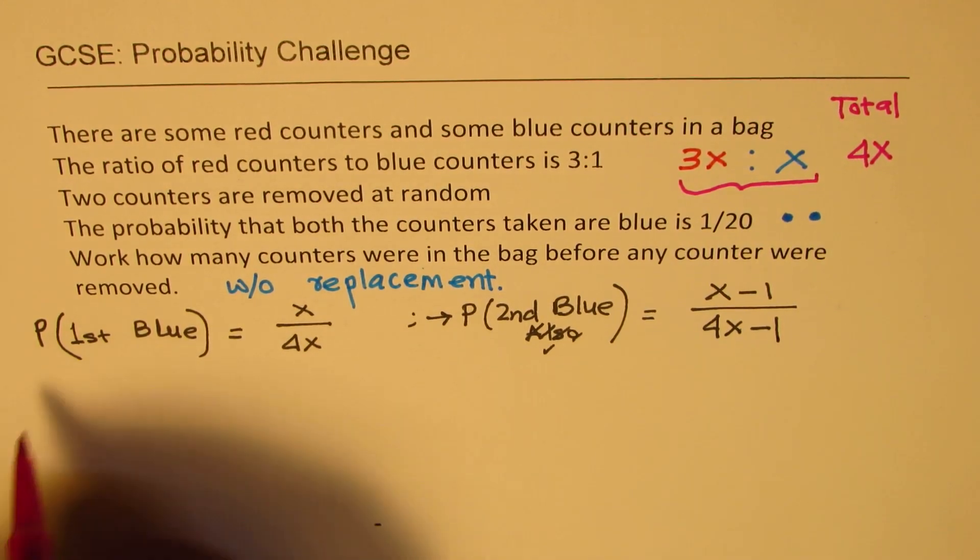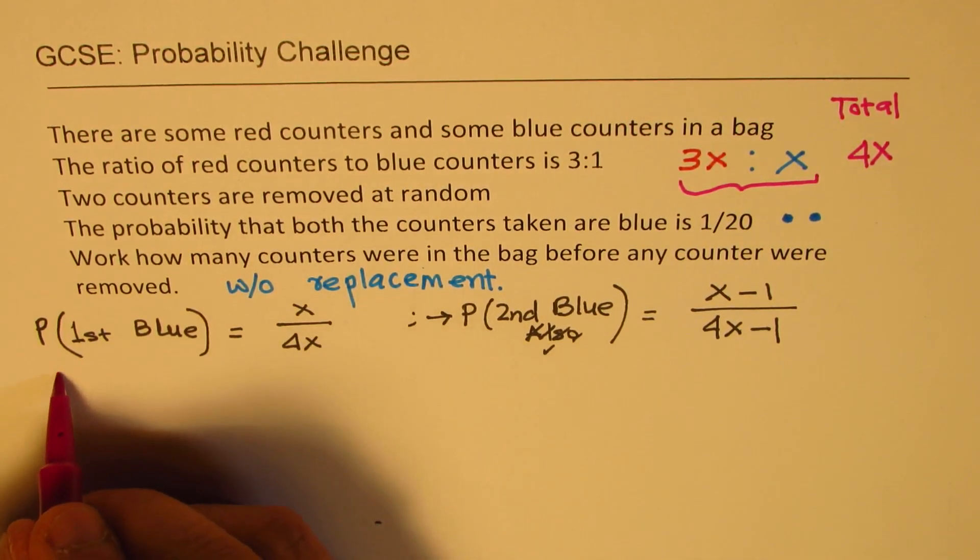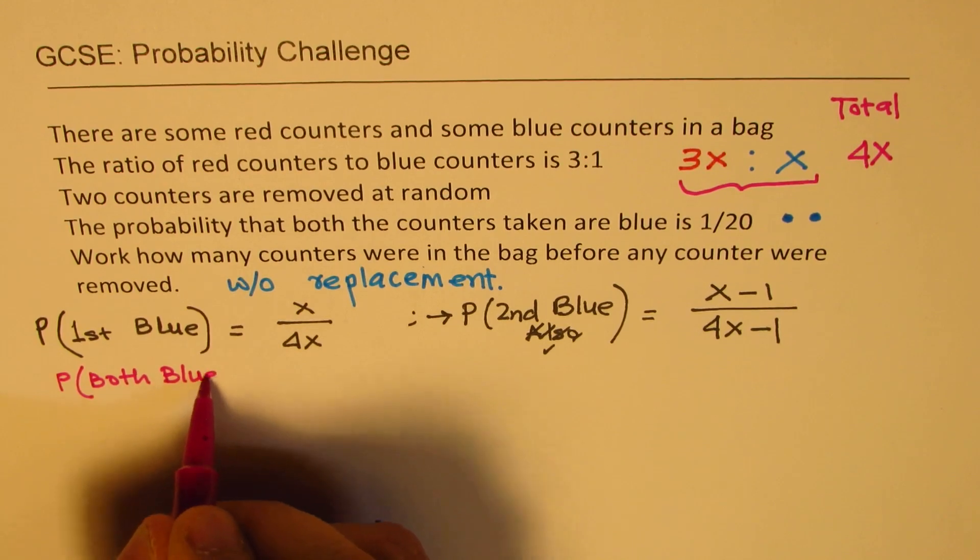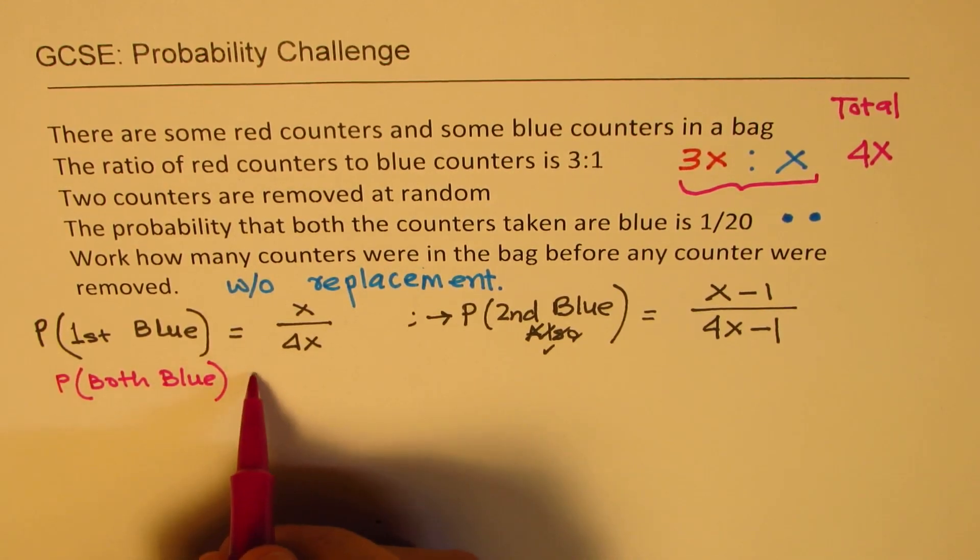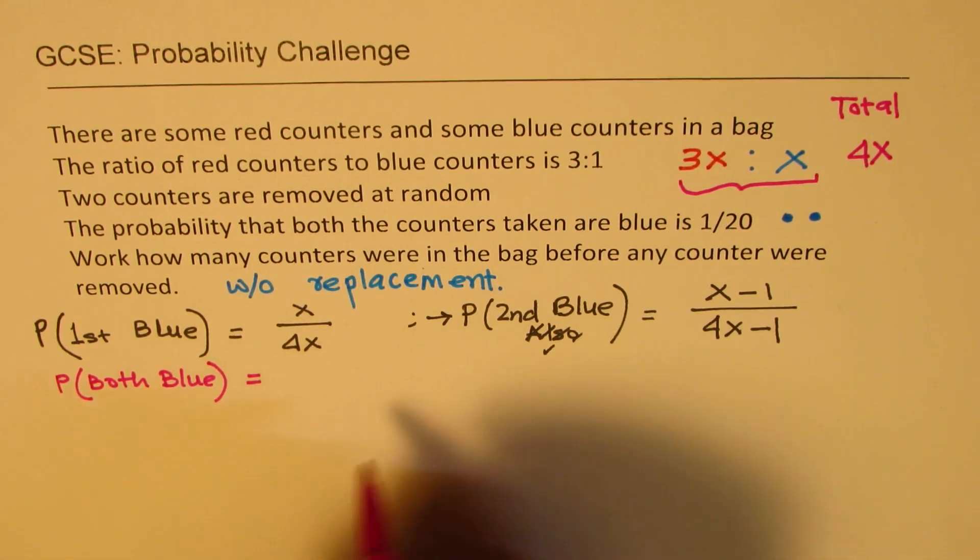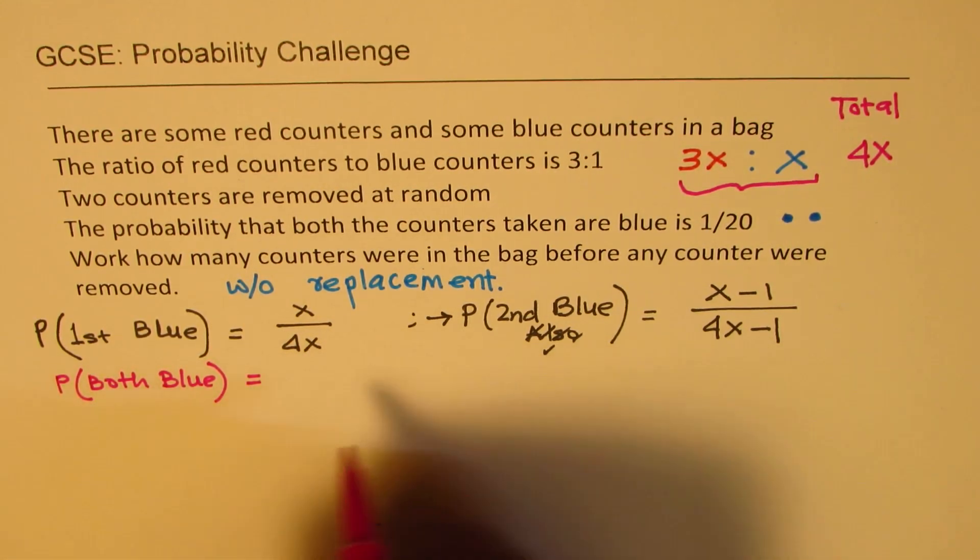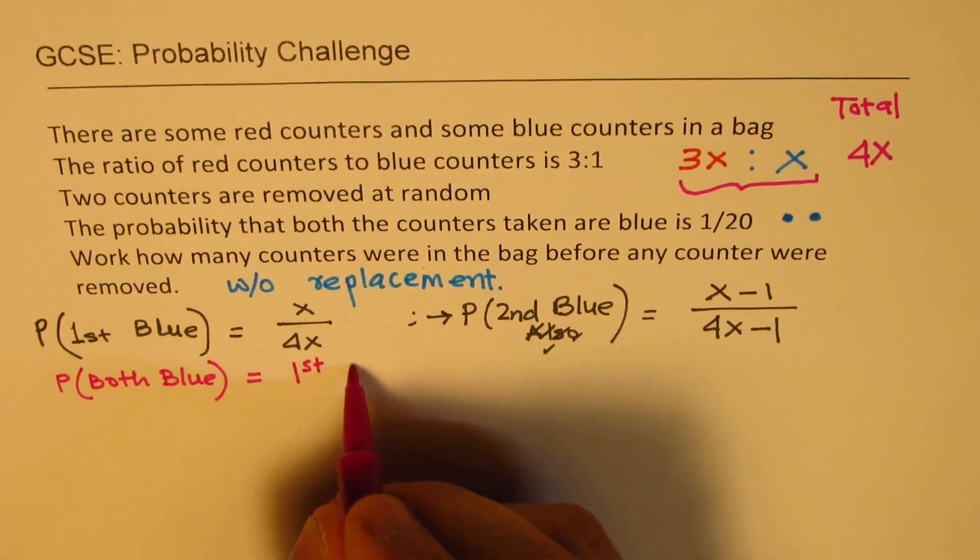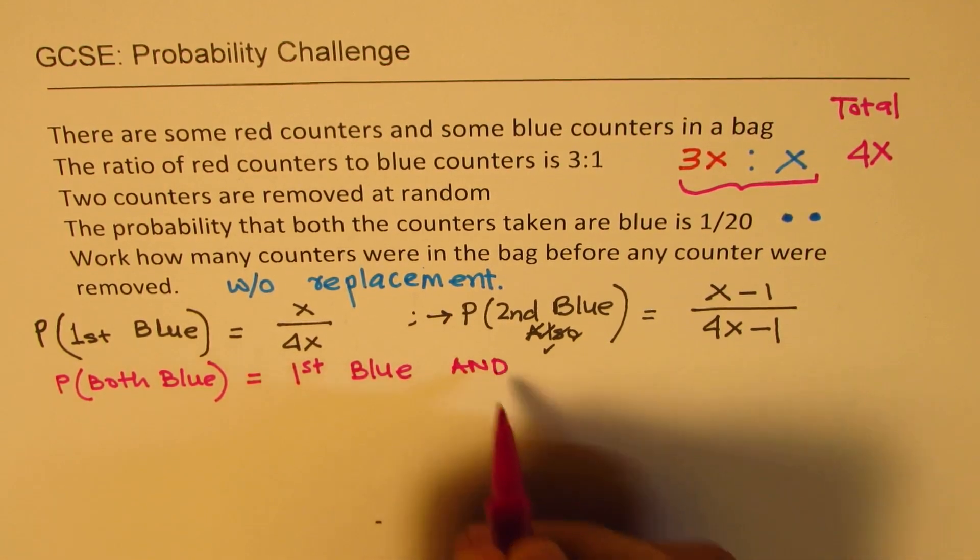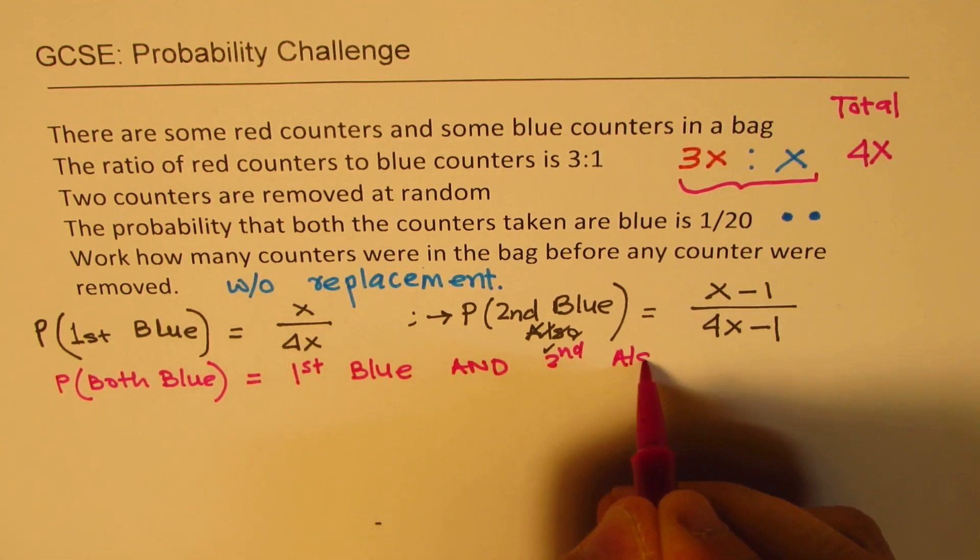Now when we write what we want to find, which is probability that both are blue. So when we say both blue, it means product. That means a condition which is saying and, first blue and second also blue.